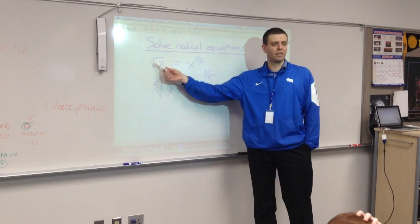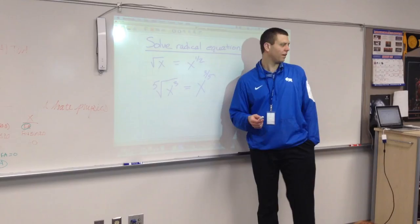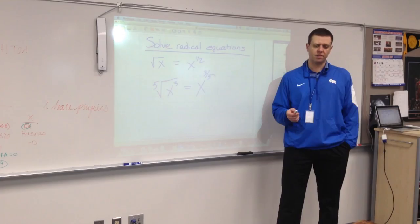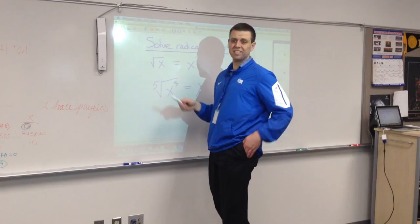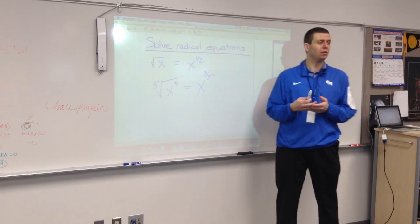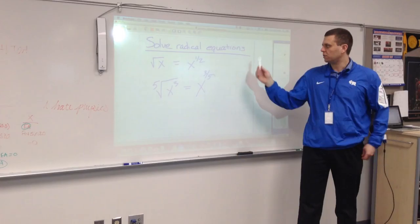What's the opposite operation of a square root? Squaring something. What's the opposite operation of a fifth root? Raise it to the fifth power. The opposite of a square root would be raising it to the second power. The opposite of a fifth root would be raising it to the fifth power and so on. They undo one another.